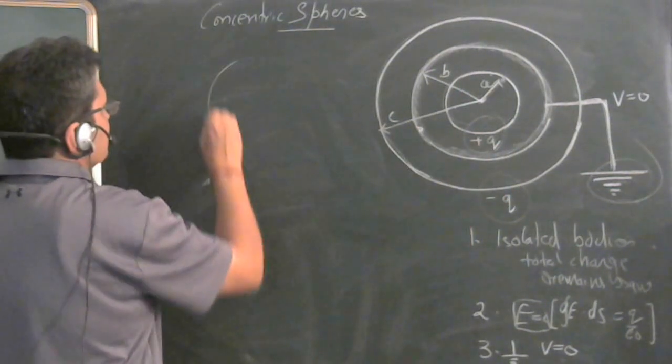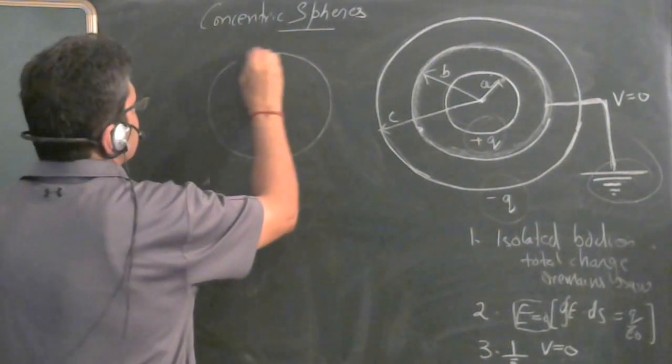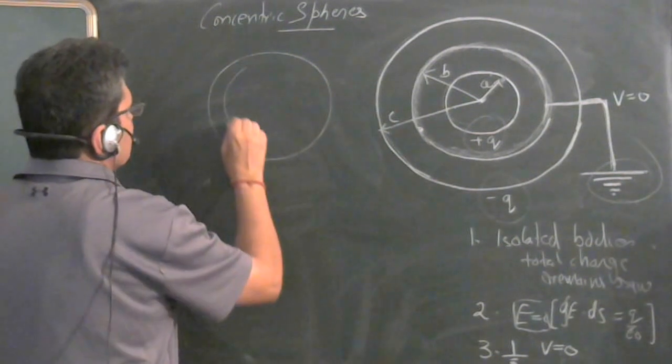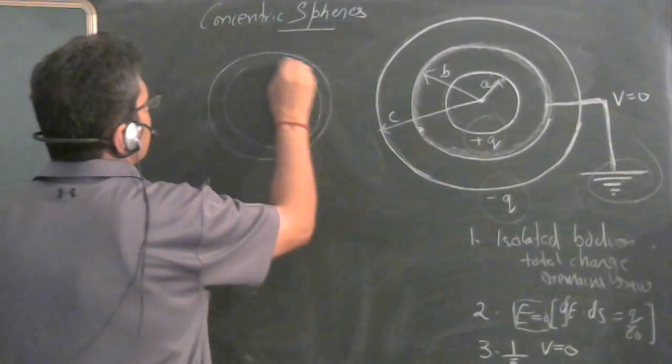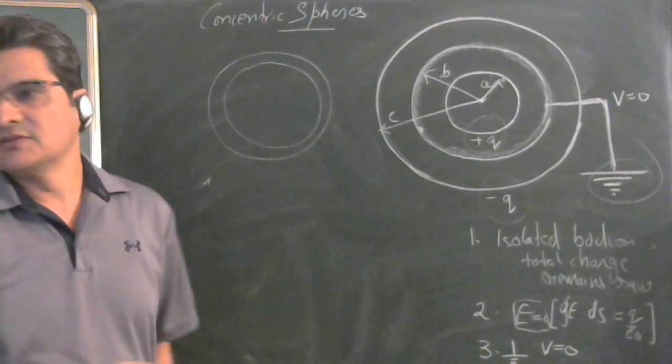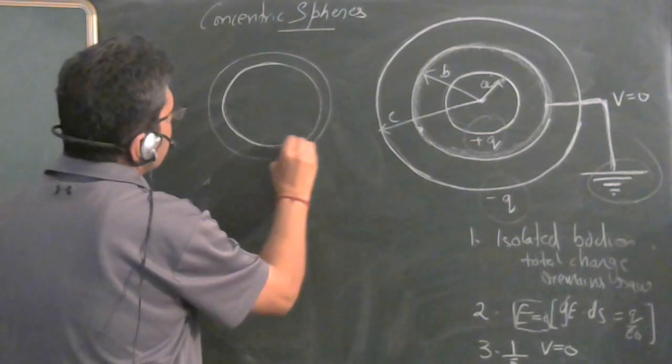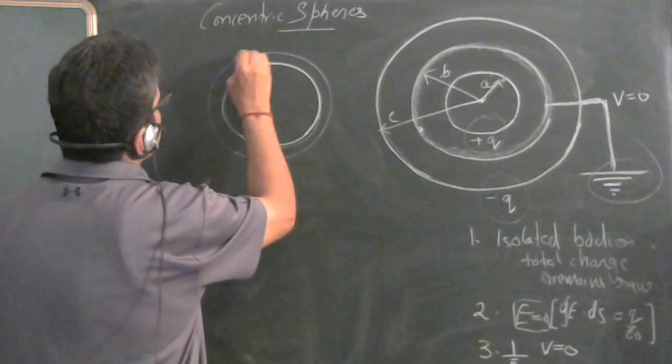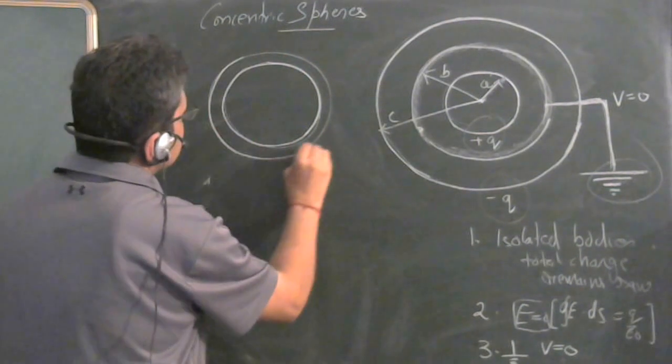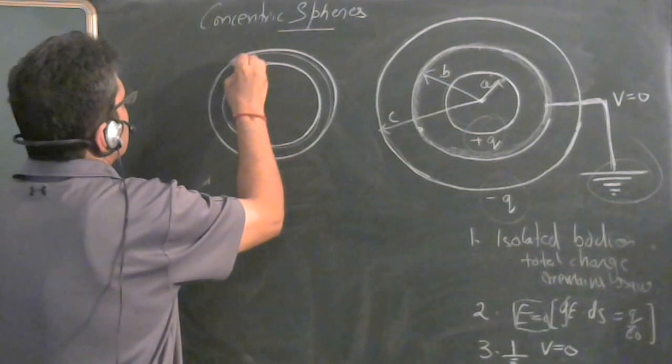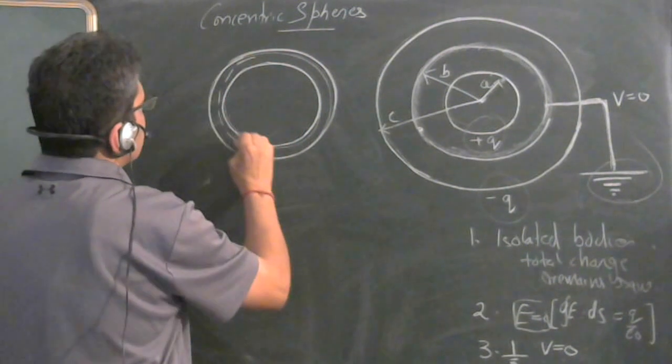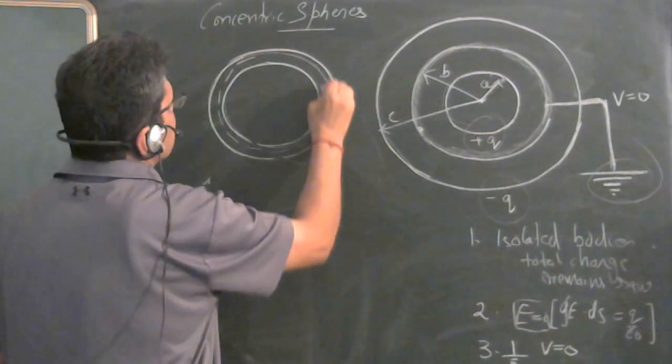Now take first the sphere B. It's a thin sphere, but even thin will have some thickness. Let this be the sphere. This is the sphere B. Take a Gaussian surface inside the walls of the sphere B.